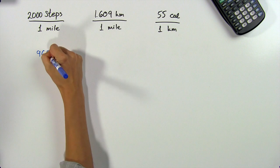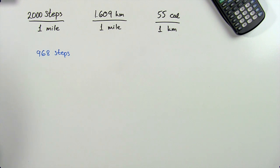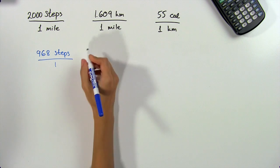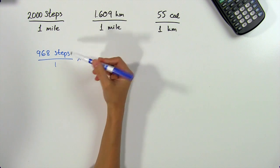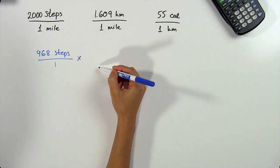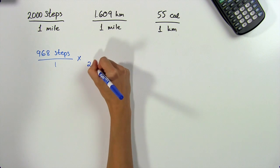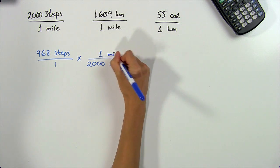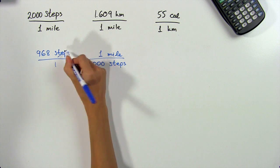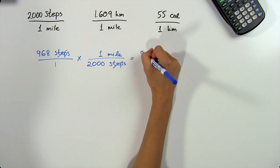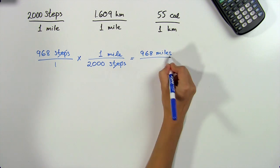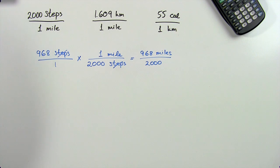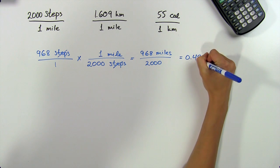So now let's use these conversion factors in a problem. Suppose you walked 968 steps and wanted to know how many calories you had burned. Our first step is to convert the steps to miles. We can do this by turning 968 steps into a fraction and multiplying it by the appropriate conversion factor. Since we have steps in the numerator, we'll want them in the denominator of our conversion factor so that they cancel out. So we'll put 2,000 steps down here and 1 mile up here, and we can go ahead and multiply across. The steps cancel out, and we're left with 968 miles divided by 2,000. When we divide, we get 0.484 miles.